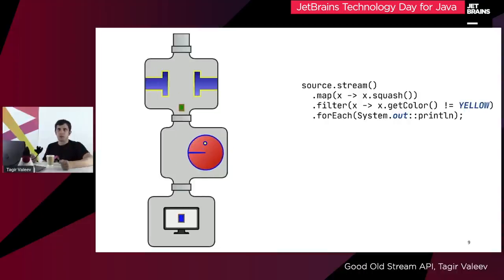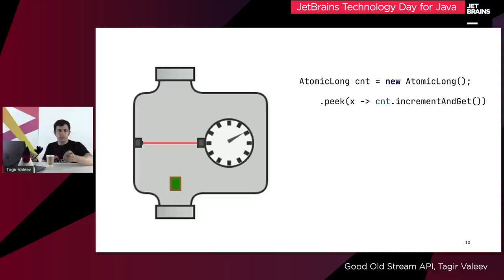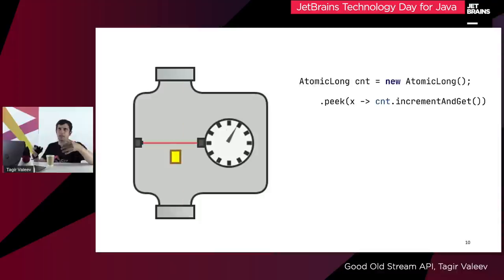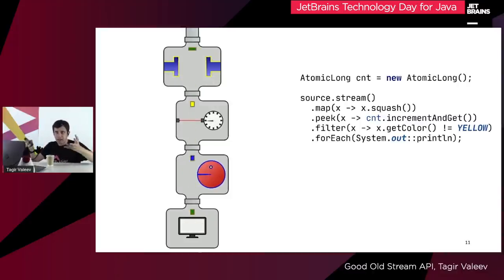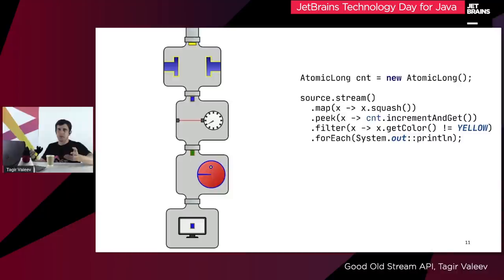Now let's assume we want to modify this pipeline somehow. For instance, let's install a meter. In the Stream API we can implement a meter using the peek operation and an atomic variable. When we encounter an element, the meter increments the variable, so we can check how many elements appear in the stream. If we want to install it between the map and the filter, we can simply disconnect those two operations, insert the meter there, and connect everything up again. It's a great feeling when you can take ready-made blocks and they connect perfectly together — it's even more satisfying than LEGO.